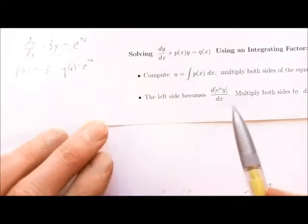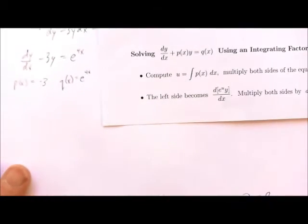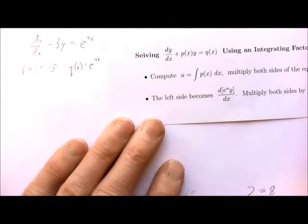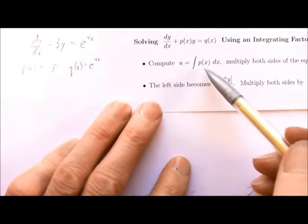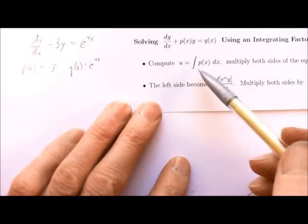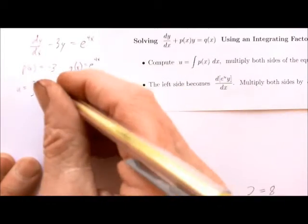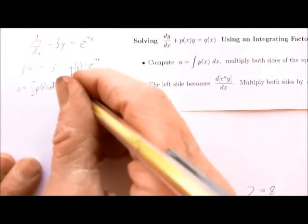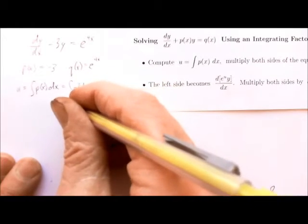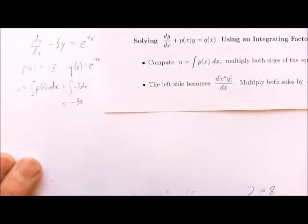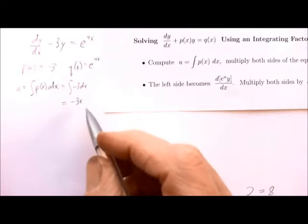It's not critical that we identify q, but it's very important that we know what p is, because the first step of this method is to compute u, which is the integral of p(x). So u equals the integral of negative 3 dx, which is negative 3x. When using this method, we don't need the plus C, so don't worry about that.